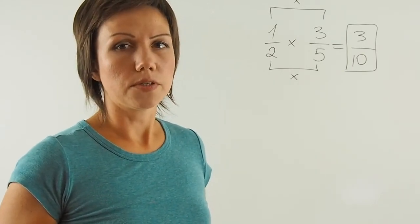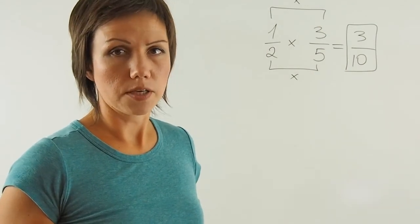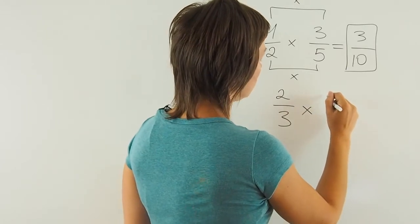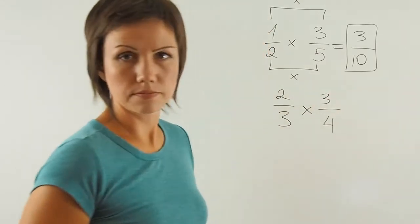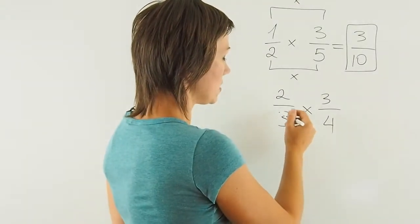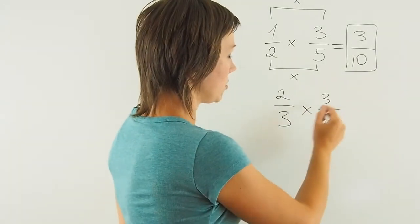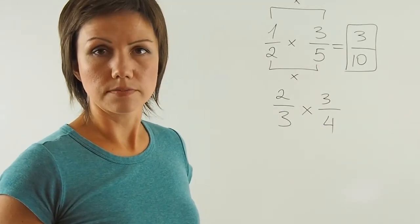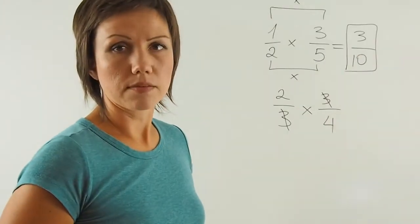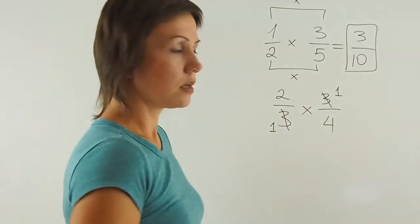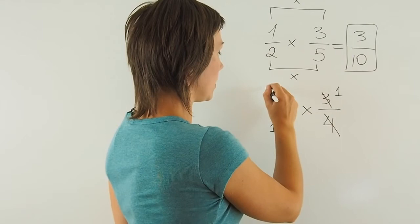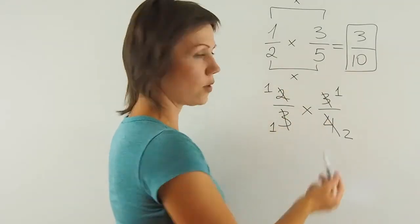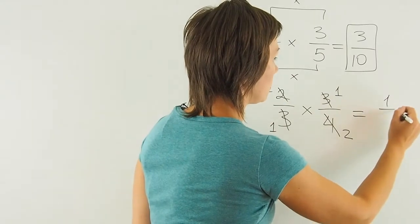Sometimes fractions can be reduced in the process of setting up the multiplication. For example, 2 thirds times 3 fourths. If I have numbers in the numerator and the denominator across from each other or on top of each other, I can reduce them, finding the greatest common factor. 3 and 3 could be reduced by 3 and turn into 1 and 1. 2 and 4 could be reduced by 2 and turn into 1 and 2. And then I end up multiplying 1 over 1 times 1 over 2, which is just 1 over 2.